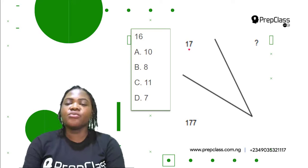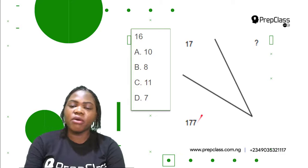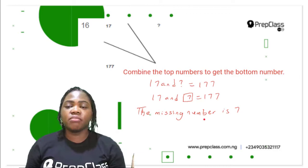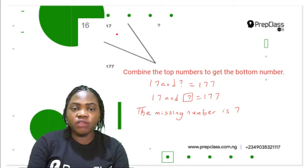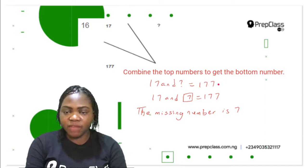Let's move on to the first question in this video. We are given a top number; the second top number is missing; and the bottom number is 177. Remember from the samples, all we have to do to get the bottom number is to combine the top numbers. 17 is one of the top numbers, and the missing top number combined with 17 will give us 177.